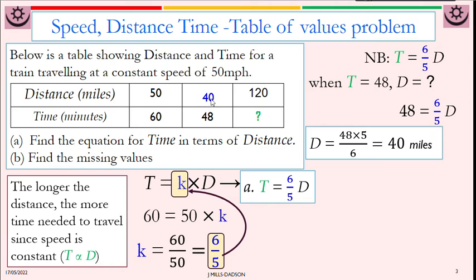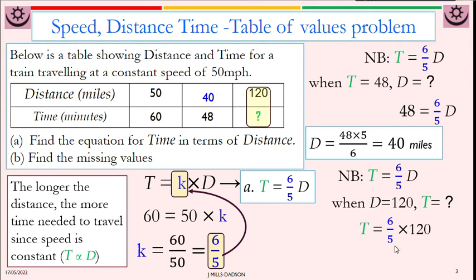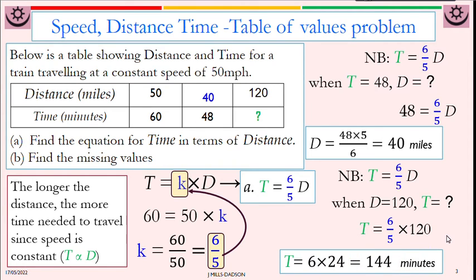Looking at this one. Given this formula, if distance is 120, how long would that journey take? Replace 120 for distance. T equals 6 over 5 times 120. This is a simple fraction of an amount or quantity. You work this out. So you're going to have 6 times 24 because 120 divided by 5 is 24. That will give you 144 minutes. It makes sense. The longer the journey, the more time we need to complete the journey. So this is another typical example of contextual question about direct and indirect.